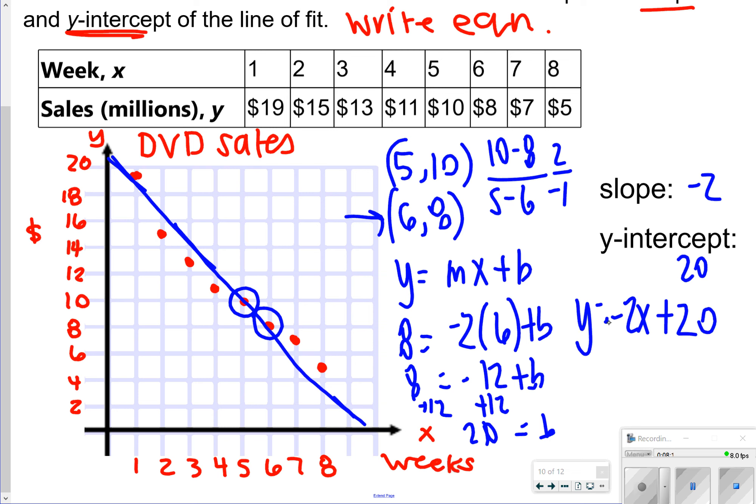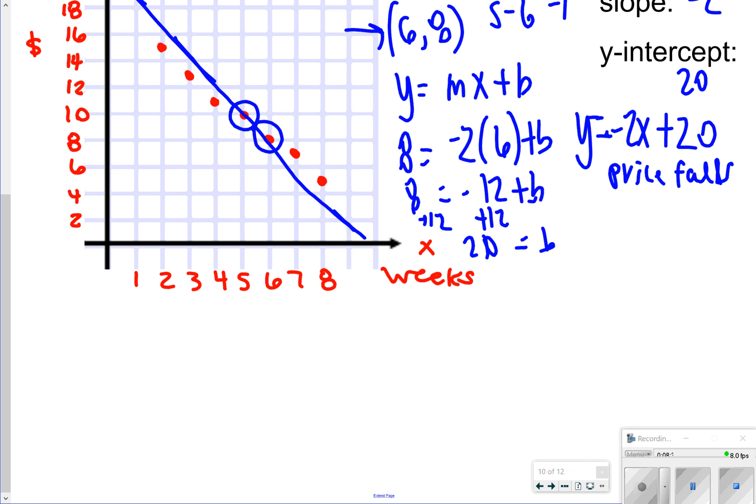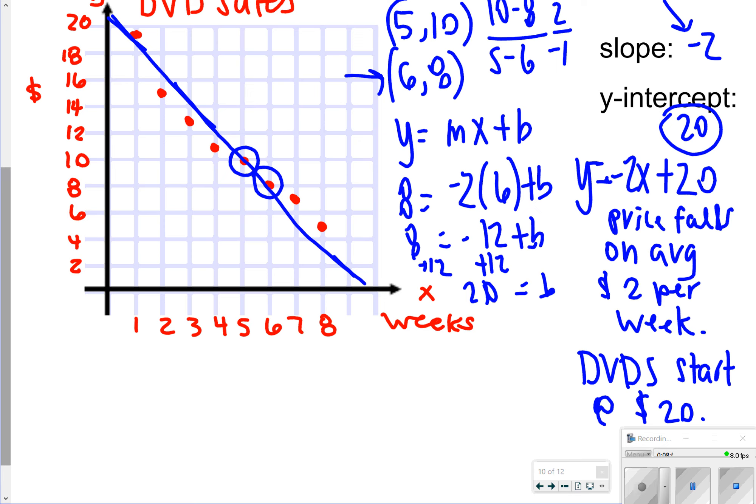So when it says to interpret the slope and the y-intercept, my slope is negative. So this would be a negative correlation. And you could also say the price falls on average $2 a week. My y-intercept is 20, so DVDs start at $20. That's all you had to do to really interpret your y-intercept and your slope.